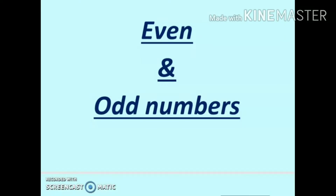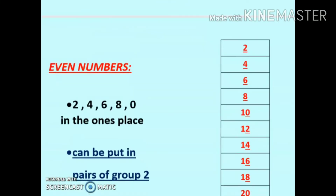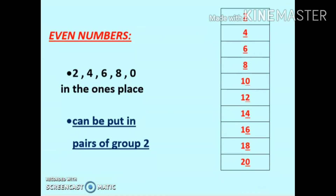Hi everyone, today we are going to learn even and odd numbers. As per the definition, if there is a 2, 4, 6, 8, or 0 in the ones place, then it is an even number.